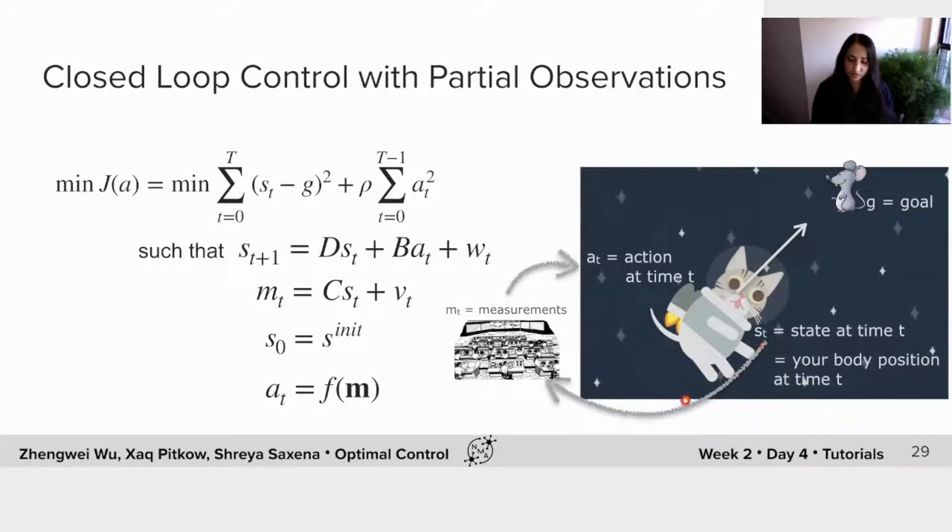So here your measurements are called m of t, m is for measurements at time t. The cost function that we would like to minimize looks very similar. It is exactly the same.